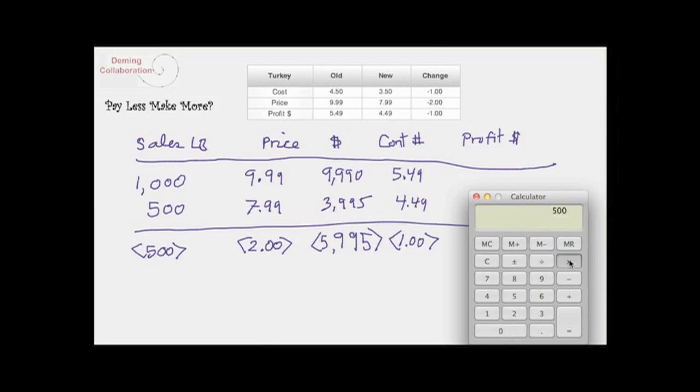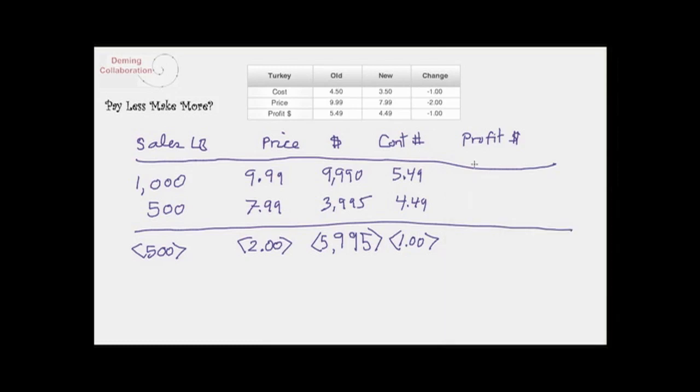500 times $4.49 is only $2,245 - so that's $2,245 versus the original $5,490.